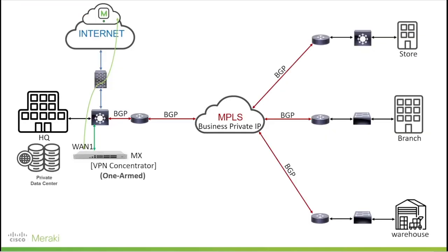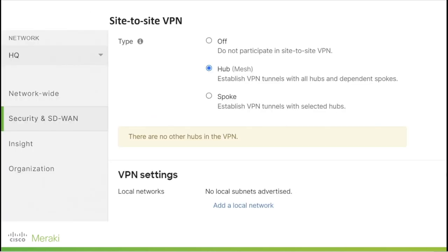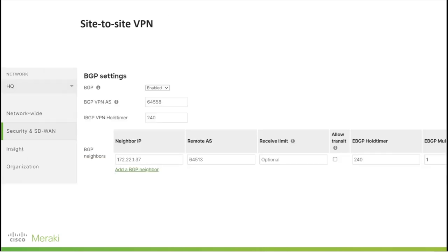Following this, we need to configure the Meraki MX at the HQ site as a hub and establish eBGP communications with the Layer 3 upstream core switch. From the Site-to-Site VPN tab, you can choose the Auto VPN type as hub. And when you scroll down, you can configure the BGP settings.